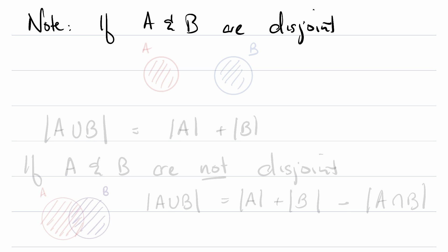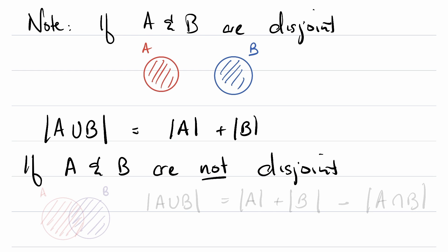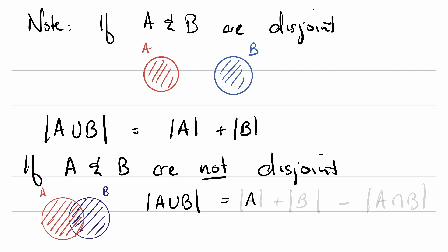There are many reasons we might be interested in when sets are disjoint. Note: if A and B are disjoint, we can visualize the cardinality of their union. The union will have cardinality equal to the sum of the cardinalities of the parts. But if A and B are not disjoint, notice that we'll be double counting the intersection. So the cardinality of A union B is the cardinality of A plus the cardinality of B, minus the cardinality of their intersection.